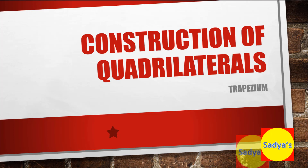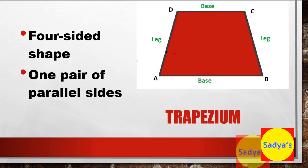Construction of quadrilaterals — today we will be looking at how to construct a trapezium. A trapezium is a four-sided shape in which we have one pair of parallel sides. As you can see in the figure, line AB and CD are parallel to each other and they are known as the base of the trapezium. Line AD and BC are not parallel and they are known as the legs of the trapezium.